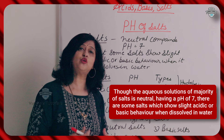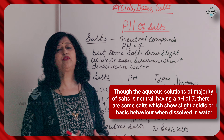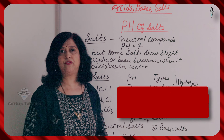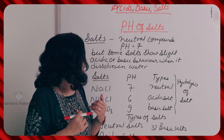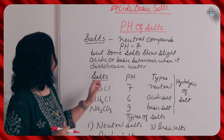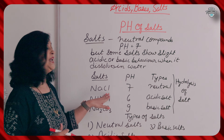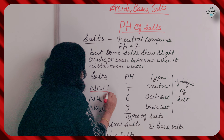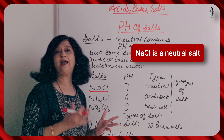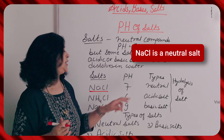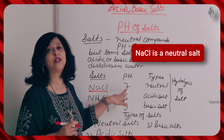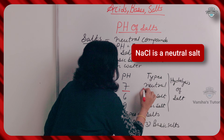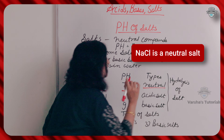When pH is 7, you can remember that the color is green. So we see salts like NaCl. We all know what sodium chloride is. Sodium chloride is a neutral salt with pH of 7. When pH is 7, remember that the color is green.